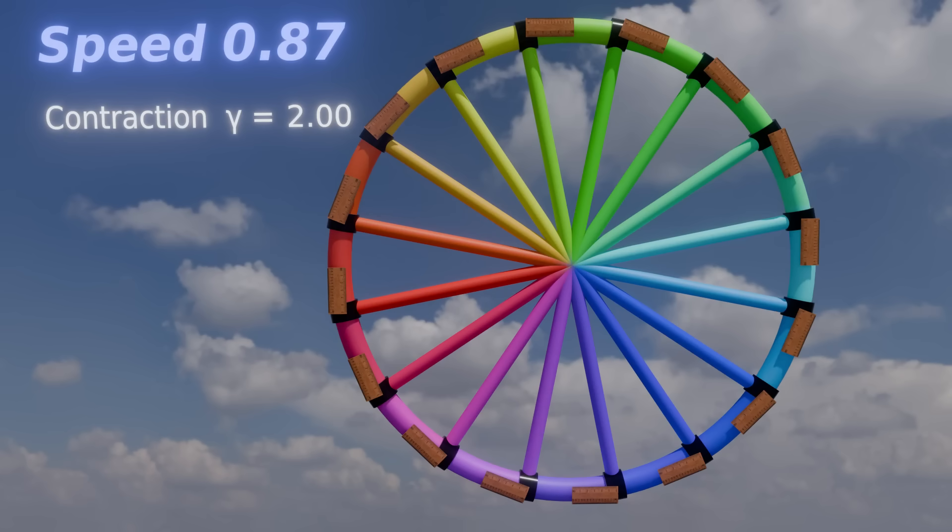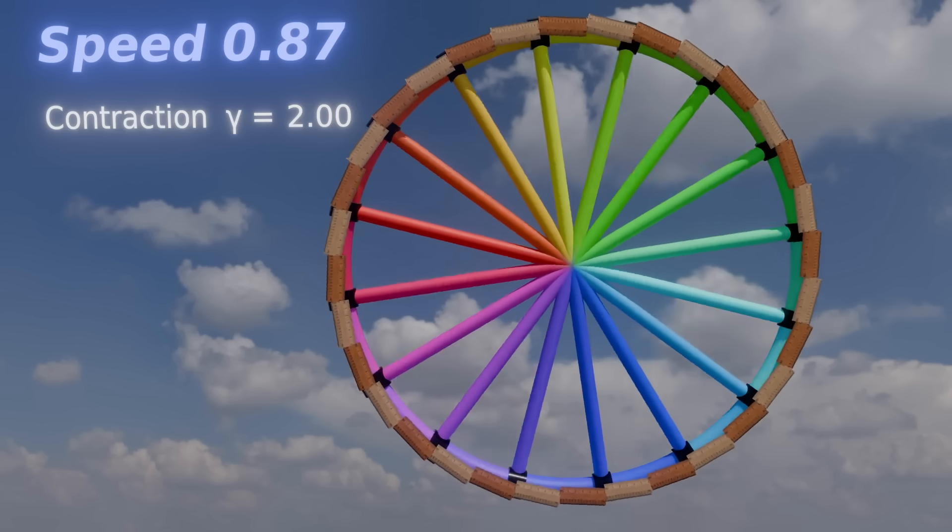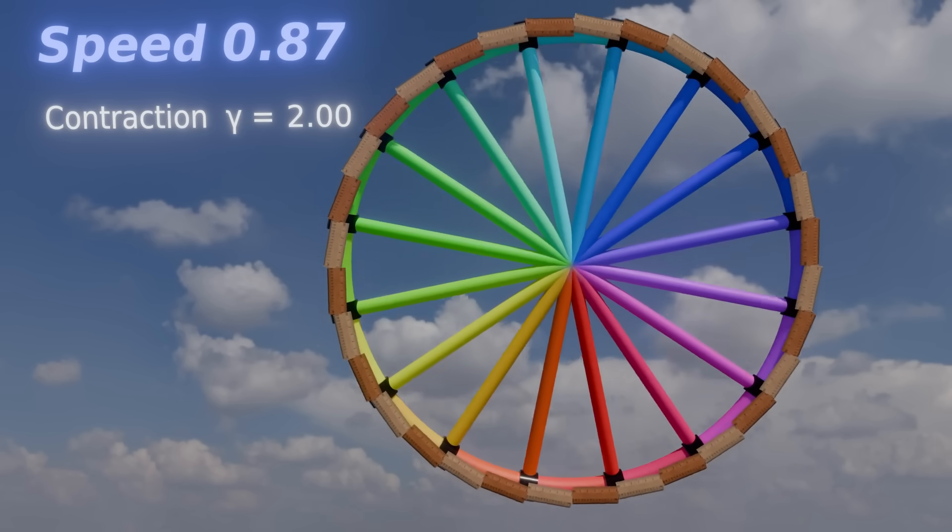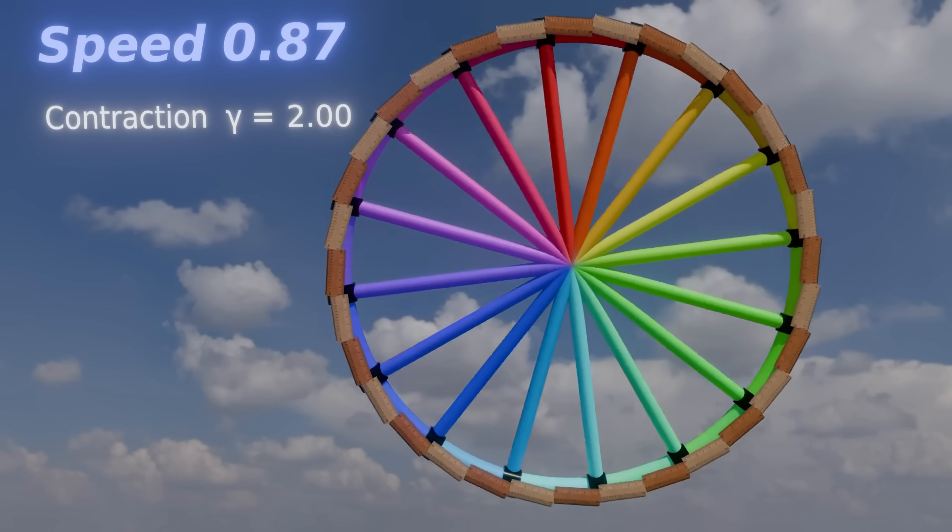If we rotate the wheel fast enough, the sticks will be half their length. Thus, we can fit twice the number of measuring sticks along the rim. This means that the rim will have twice the length of a stationary rim. So again, a rotating wheel has a greater circumference than a stationary one.